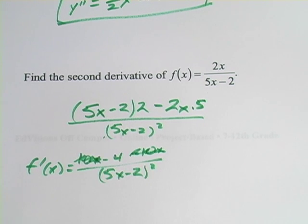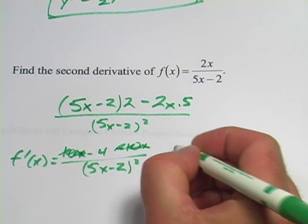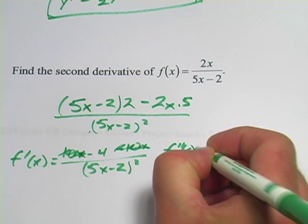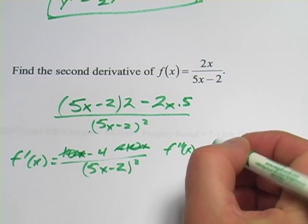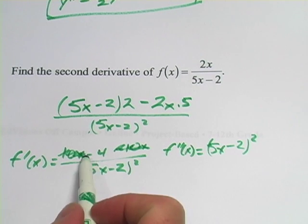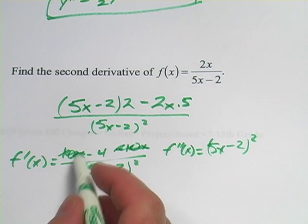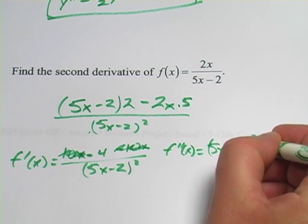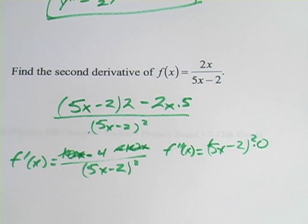Now, to find our second derivative, we're going to go ahead and apply the quotient rule again. We'll do that over here. So f double prime of x equals low, that's 5x minus 2 quantity squared. And d high, the derivative of what's on the top here, minus 4, is actually 0, because the derivative of any constant is 0. So that part's going to go away. That's kind of good news.